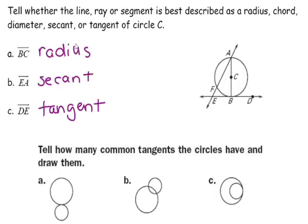Segment BC was a radius because it goes from the edge of the circle to the center. Line EA was a secant because it intersected the circle at two points — point A and point F. And DE was a tangent because it intersected the circle at one point, point B.